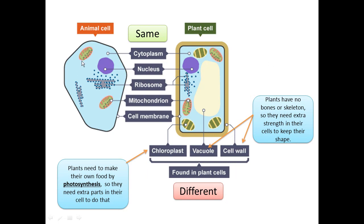This slide is a summary of what we've covered. The organelles found in both animal and plant cells are cytoplasm, nucleus, mitochondria, and cell membrane. The three additional organelles found only in plant cells are: chloroplasts, which make photosynthesis possible — allowing plant cells to make their own food; the vacuole, which stores food produced by photosynthesis and helps keep the shape; and the cell wall, which provides strength and shape. The vacuole and cell wall are necessary because plants don't have a skeleton.